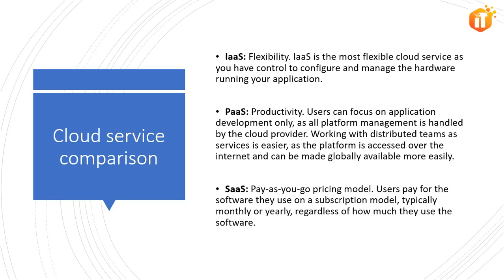In summary, IaaS, PaaS, and SaaS each contain different levels of managed services. You may use a combination of these types — for example, you could use Office 365 on your company's computer, which is SaaS; host your VMs in Azure, which is IaaS; and use Azure SQL Database, which is PaaS, to store your data. With the cloud's flexibility, you can use any combination that provides you with the maximum result.